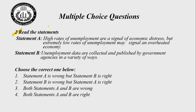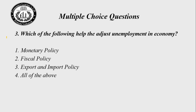Statement A: High rates of unemployment are a signal of economic distress, but extremely low rates of unemployment may signal an overheated economy — this is correct. Statement B: Unemployment data are collected and published by government agencies in a variety of ways — this is also correct. So the right answer is Choice 4: both statements are right.